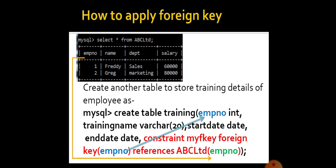So we are giving an instruction to the compiler that our foreign key is employee NO. Both are same. Foreign key is EMPNO. And the compiler needs to reference the values from employee number of ABC Limited.